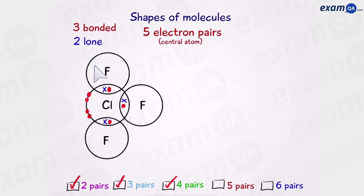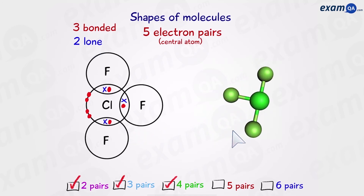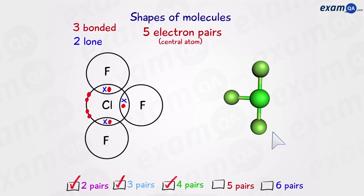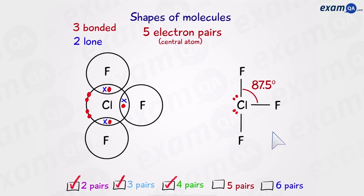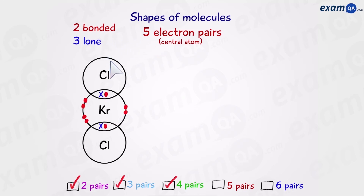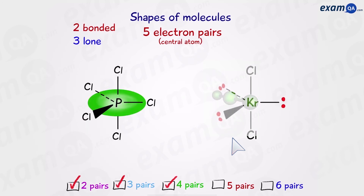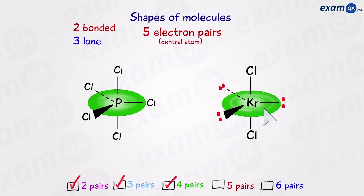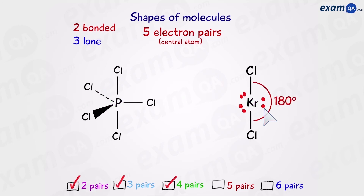Three bonded pairs and two lone pairs gives a shape with an angle of 87.5 degrees, called T-shape. The last example for the family of five is two bonded pairs and three lone pairs. Using phosphorus pentachloride as the starting point, the three equatorial positions can be replaced by three lone pairs of electrons, leaving only the two axial bonds with an angle of 180 degrees. So this molecule is also called linear.